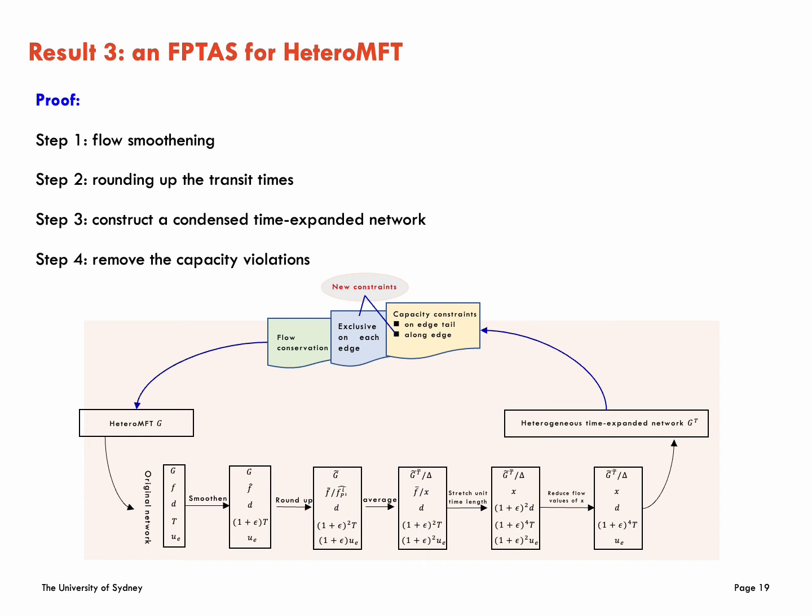The above four steps complete the proof of the lemma. With the help of the lemma, the proof of our main theorem becomes rather straightforward. That is, we use binary search to find the smallest T such that in the capital delta condensed time-expanded network constructed from the lemma, there exists a feasible static flow which in turn implies the desired flow over time in G.